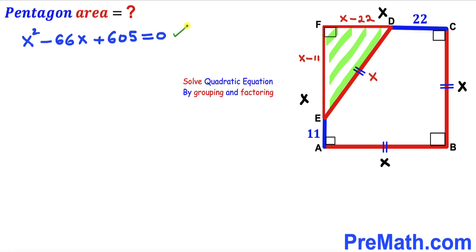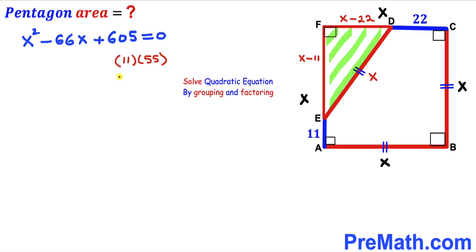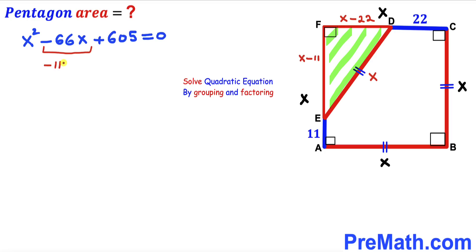We have ended up with this quadratic equation and we are going to solve it by grouping and factoring. Let's focus on the constant 605 — this can be broken down as 11 times 55, and furthermore 11 plus 55 gives us 66, which matches our middle coefficient.